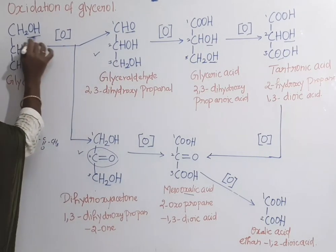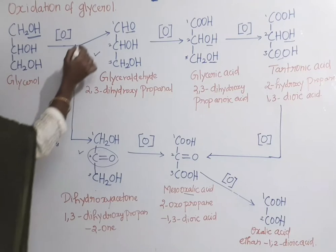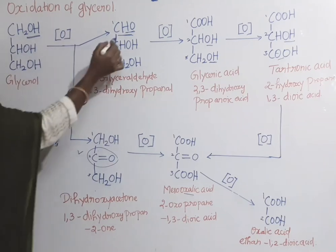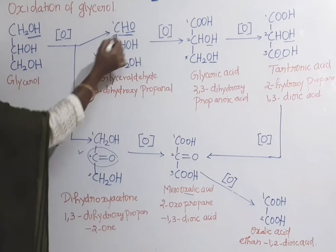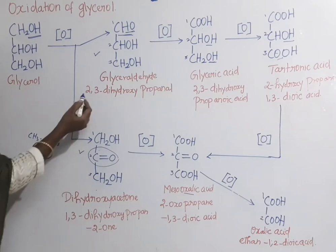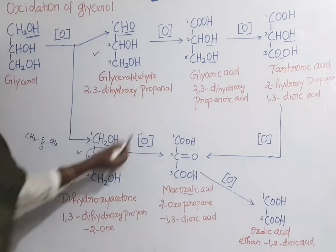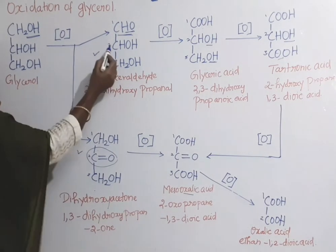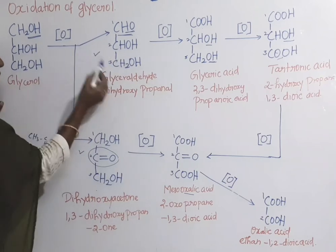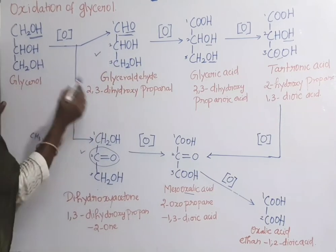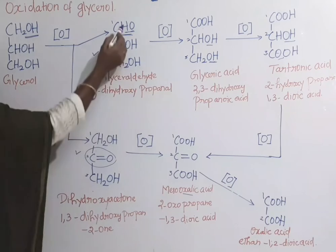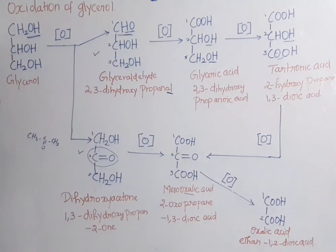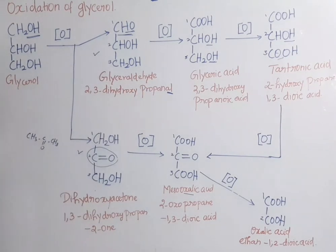Glycerol is oxidized to give the product where the primary alcohol CH2OH is oxidized to form the aldehyde CHO. So this is glyceraldehyde, also named 2,3-dihydroxypropanol — that is, first carbon, second carbon, third carbon. On the second carbon there is a hydroxy group, and on the third carbon there is a hydroxy group, so 2,3-dihydroxypropan-1-al (propanaldehyde, where 'al' means aldehyde).